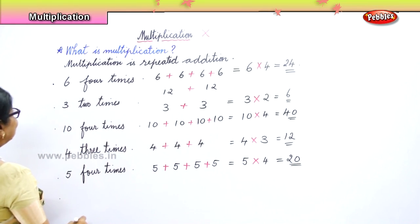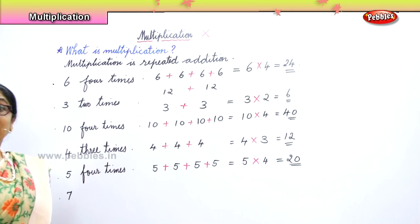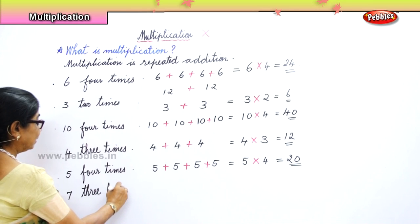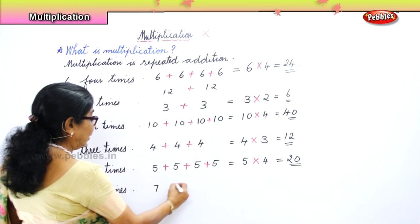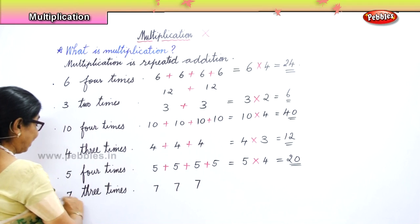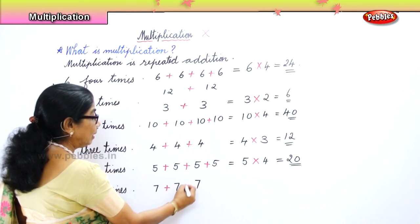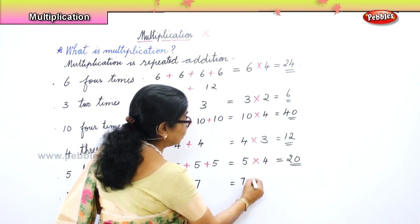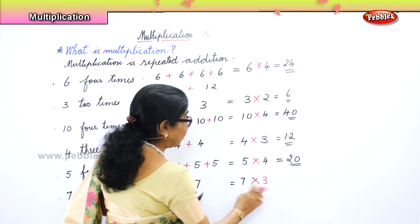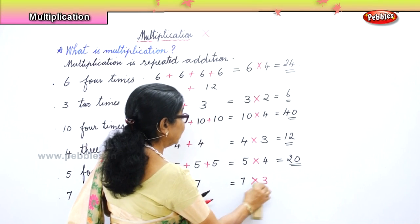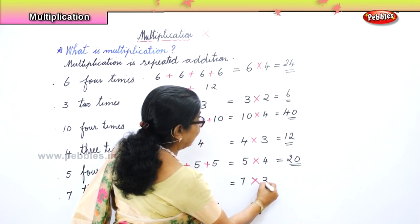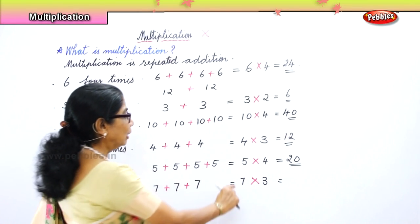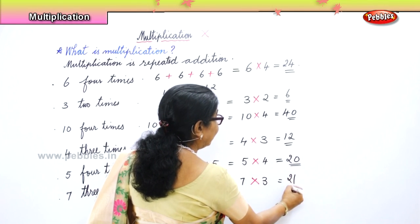Let's take another number: seven, three times. What is seven three times? Seven, one; seven, two; seven, three — that is seven three times. Seven plus seven plus seven. Seven plus seven is fourteen, fourteen plus seven is twenty-one. Seven threes are twenty-one. This is the multiplication sign.